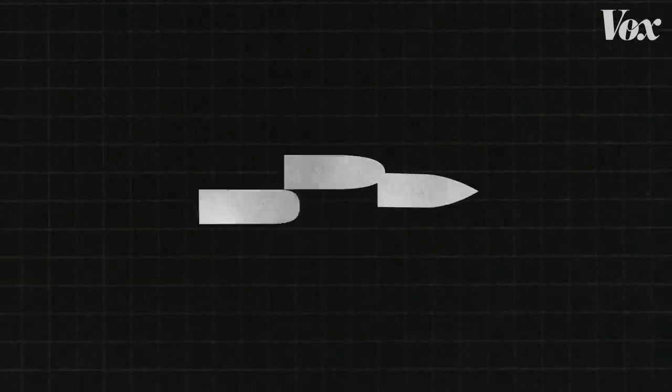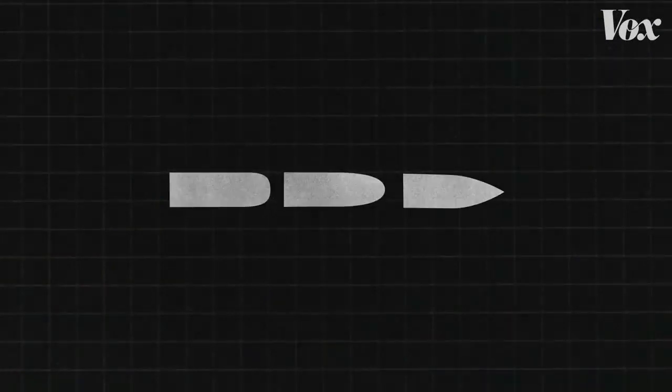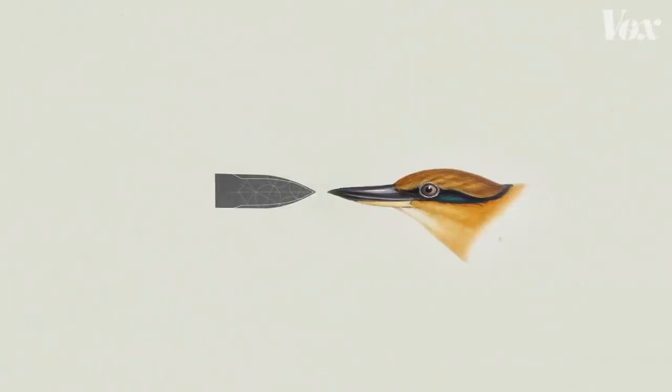Nakatsu took that shape to the design table. The team shot bullets shaped like different train-nose models down a pipe to measure pressure waves and dropped them into water to measure the splash size. The quietest nose design was the one modeled most closely after the kingfisher's beak.